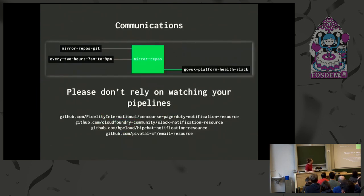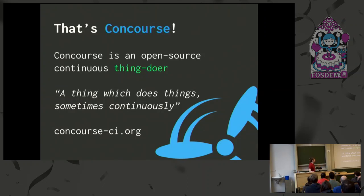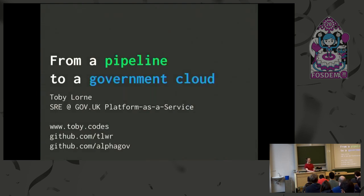For communications, don't rely on watching your pipelines — you want everything to tell you when it's wrong. There's a PagerDuty resource that will call you if a job fails, Slack and HipChat integrations, an email resource, and an IRC resource so Concourse can post into IRC. That's Concourse — an open source continuous thing doer. There's a really wonderful quickstart on concourse-ci.org that will set up Concourse running locally so you can play around with it, and there's a vibrant open source community around it.